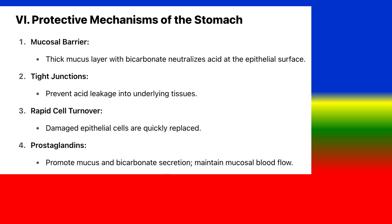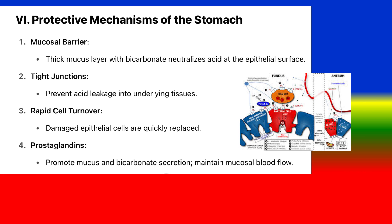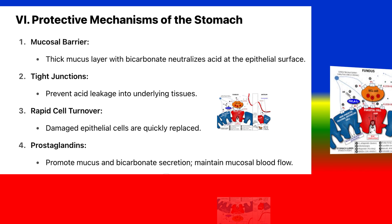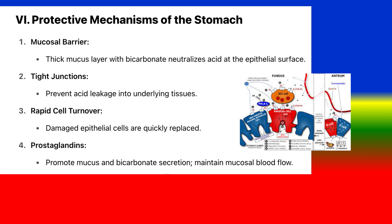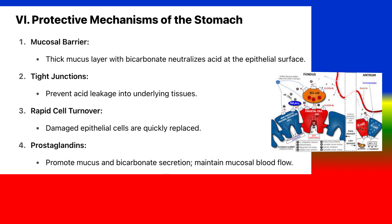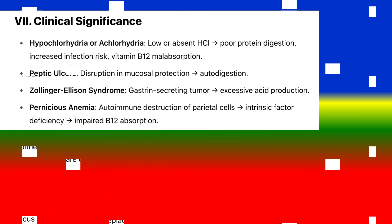Protective mechanisms of the stomach: 1. Mucosal barrier — a thick mucous layer with bicarbonate neutralizes acid at the epithelial surface. Tight junctions prevent acid leakage into underlying tissues. 2. Rapid cell turnover — damaged epithelial cells are quickly replaced. 3. Prostaglandins — promote mucus and bicarbonate secretion and maintain mucosal blood flow.